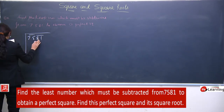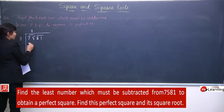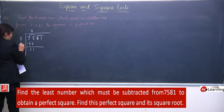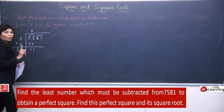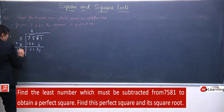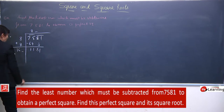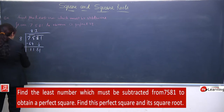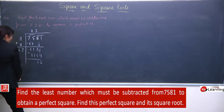Humne pairing bana li - 75 mila, 81 mila. Hum aisa number choose karenge ki jisse 75 mile ya usse less. So obvious hai: 8. 8 squared is 64. Humne subtract kar diya, yahan par humne immediately add kiya - yeh step aapko nahi bhoolna hai. Humne subtract kiya, toh obvious hai hum yeh pair copy karenge. Ab yahan hum aisa number choose karenge - 167 times 7 is 1169. Obvious hai chhota hai, toh kuch remainder milega. So remainder is 12.